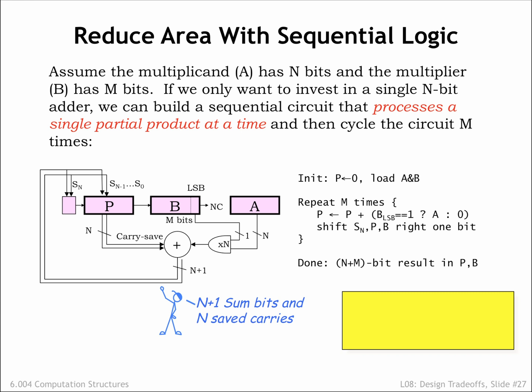So each cycle one bit of the accumulated sum is retired to the B register since it can no longer be affected by the remaining partial products. Think of it this way, instead of shifting the partial products left to account for the weight of the current multiplier bit, we're shifting the accumulated sum right.